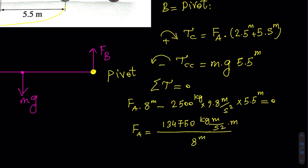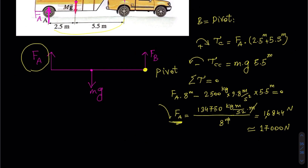We move the negative term to the other side and divide by the coefficient 8 meters. The meters cancel, giving F A equal to 16,844 newtons. Rounding to two significant figures, F A is approximately 17,000 newtons. Both values are acceptable answers.